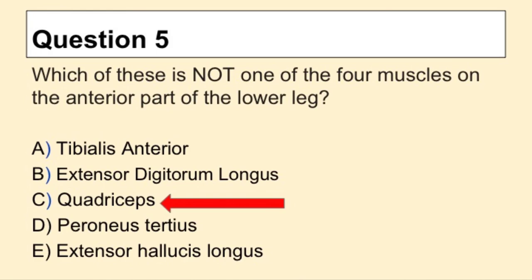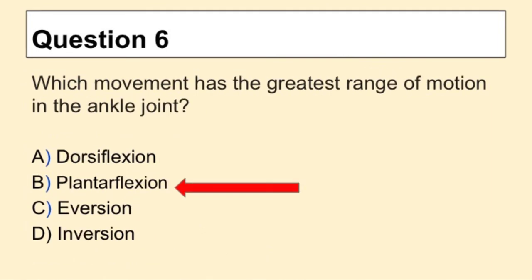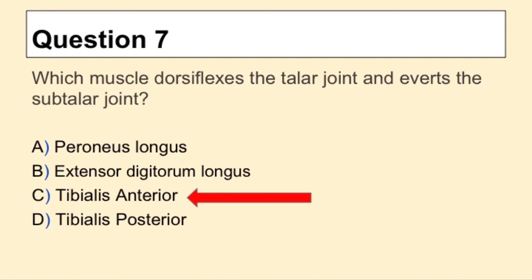Question 5: Which of these is not one of the four muscles on the anterior part of the lower leg? The answer is C, quadriceps. Question 6: Which movement has the greatest range of motion in the ankle joint? The answer is B, plantar flexion. Question 7: Which muscle dorsiflexes the talar joint and everts the subtalar joint? The answer is C, tibialis anterior.